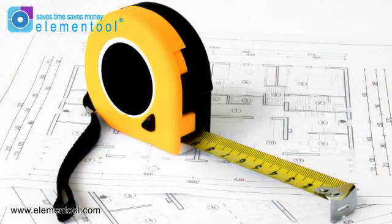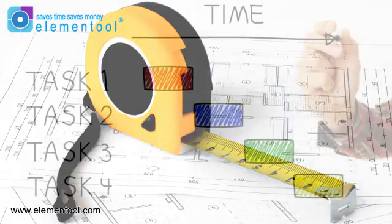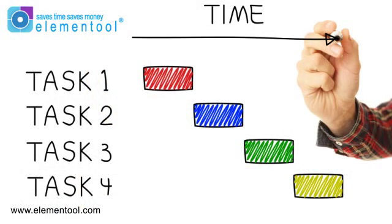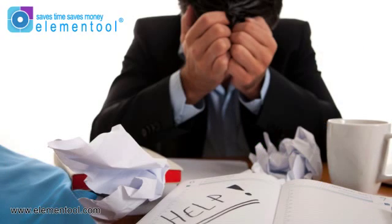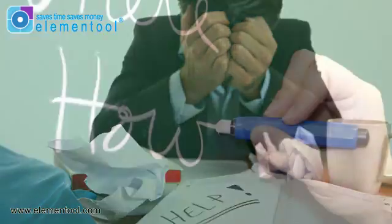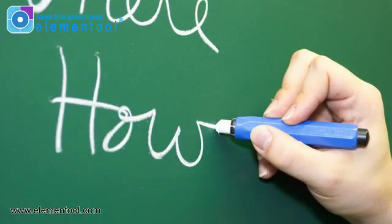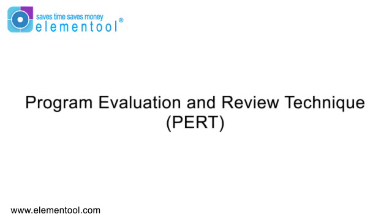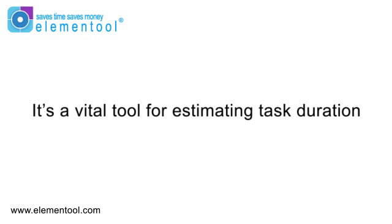You need good, accurate estimates of task durations in order to build a project schedule and ensure that you deliver your product on time. Coming up with a good estimate is a common challenge that many people struggle with. So I'm going to teach you a simple estimation formula called PERT, also known as the Program Evaluation and Review Technique. PERT isn't just a cute name — it's a vital tool for estimating task duration.